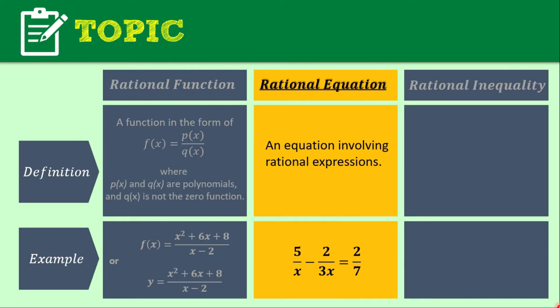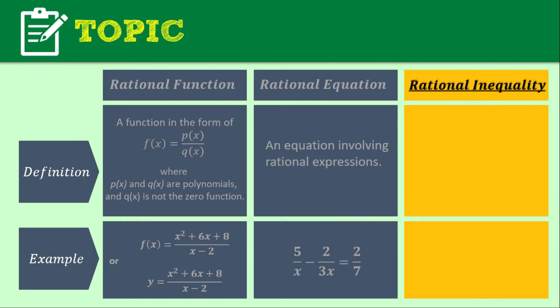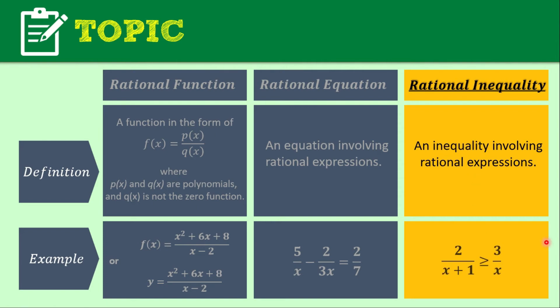The last one is rational inequality. When you say rational inequality, from the name itself it makes use of inequality symbols. It is an inequality involving rational expressions — similar to a rational equation, it involves rational expressions, but in this case you will see inequality symbols. An example: 2/(x + 1) ≥ 3/x. This is an example of a rational inequality.